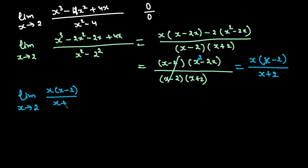Now with limit as x approaches 2 of x(x - 2)/(x + 2), plugging in x = 2 gives 2 times 0 in the numerator and 4 in the denominator, which is 0/4. This is no longer indeterminate, so the limit equals 0.